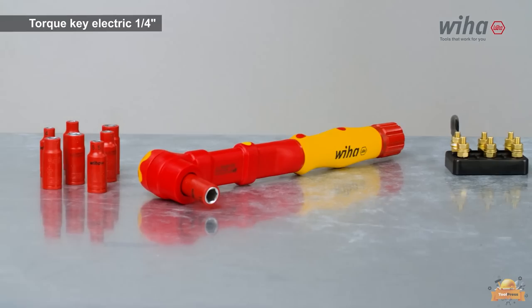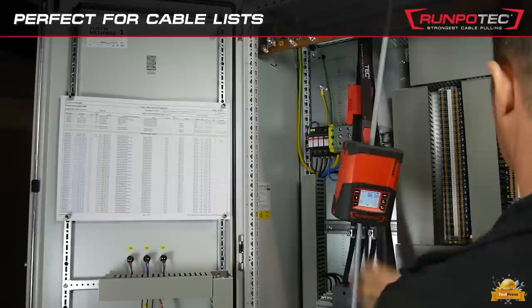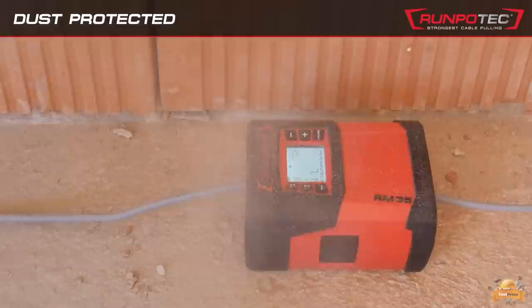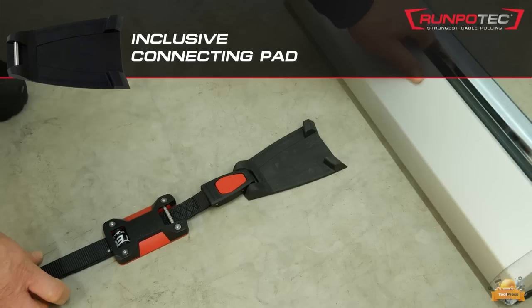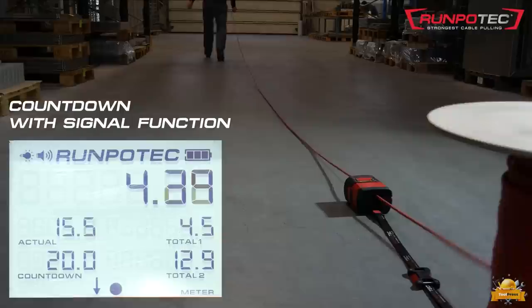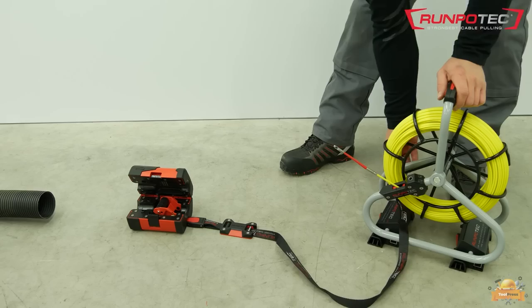The Runpometer RM35 is a digital cable length measuring device which can be used to precisely measure cables, conductors, ropes, or hoses with a diameter of 2 millimeters to 32 millimeters. It features excellent durability, being splash water and dust resistant as well as highly shock resistant, making it ideal for challenging job site conditions. This device is particularly advantageous for electrical stores as it is equipped with a countdown signal function that indicates when the desired length has been reached. It can be easily connected to the Export XP 300 or XP 500 cable unwinding system via the supplied belt and clip system. The Runpometer is compatible with all cable pulling systems.